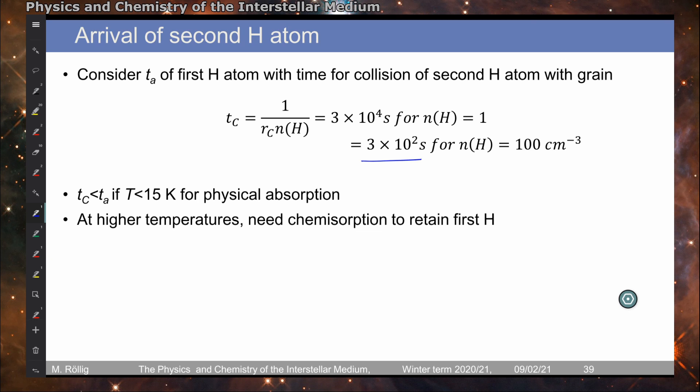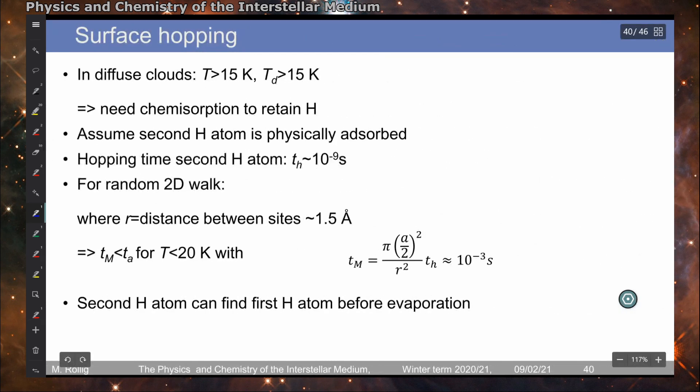So by just comparing the timescales, we can argue that the probability for a collision is basically unity or probability for the encounter between hydrogen atoms. Now, the migration around the surface, the surface hopping, is only possible if it's not strongly bound. So we are in physisorption conditions.